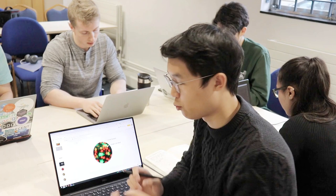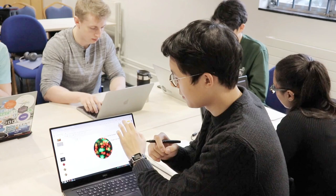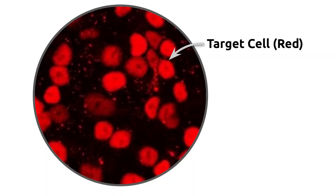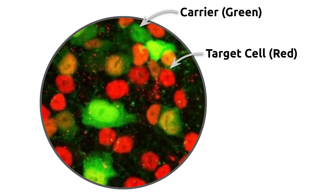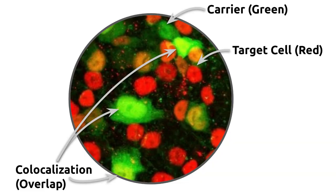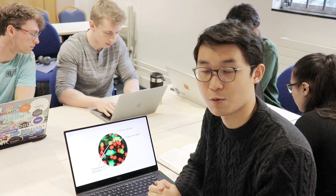Our clients at the University of Cambridge have been doing gene therapy research to come up with life-saving treatments. One part of their research is counting cells. They first have microscope images of their experiments where they stain the cells they want to target in red, and then they stain the carriers — what inserts the gene therapy into the cells — in green. The researchers want to investigate co-localization, which basically means how much of these carriers actually target the cells. This appears on the microscope images as yellow, where the green carriers overlap the red target cells.